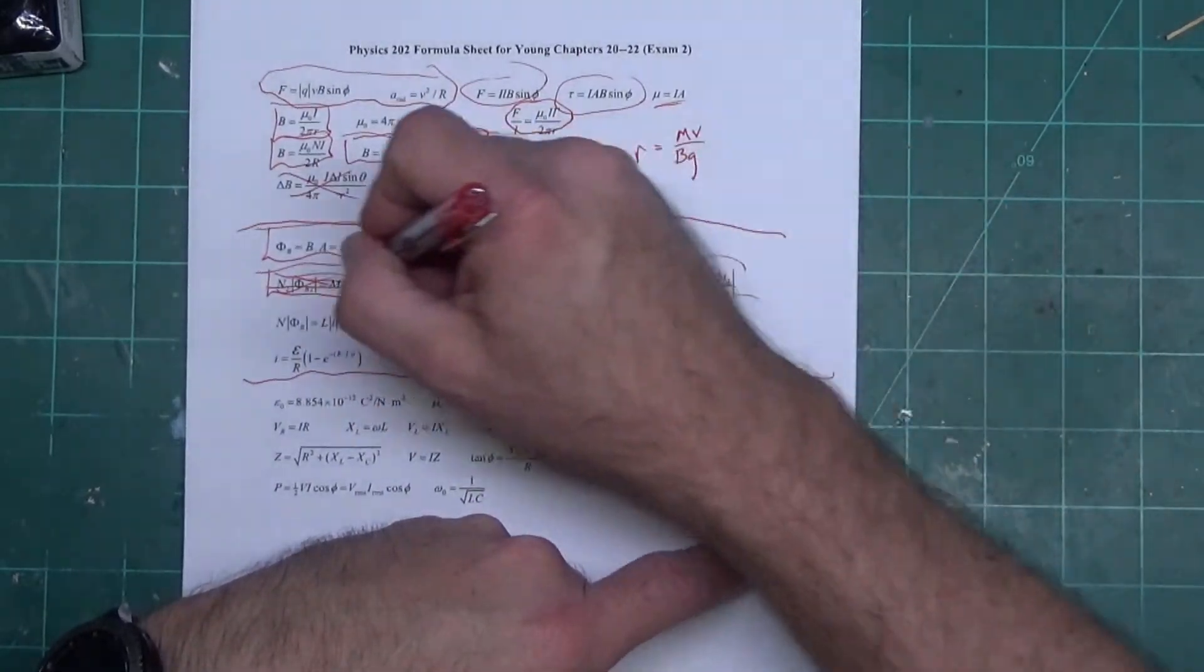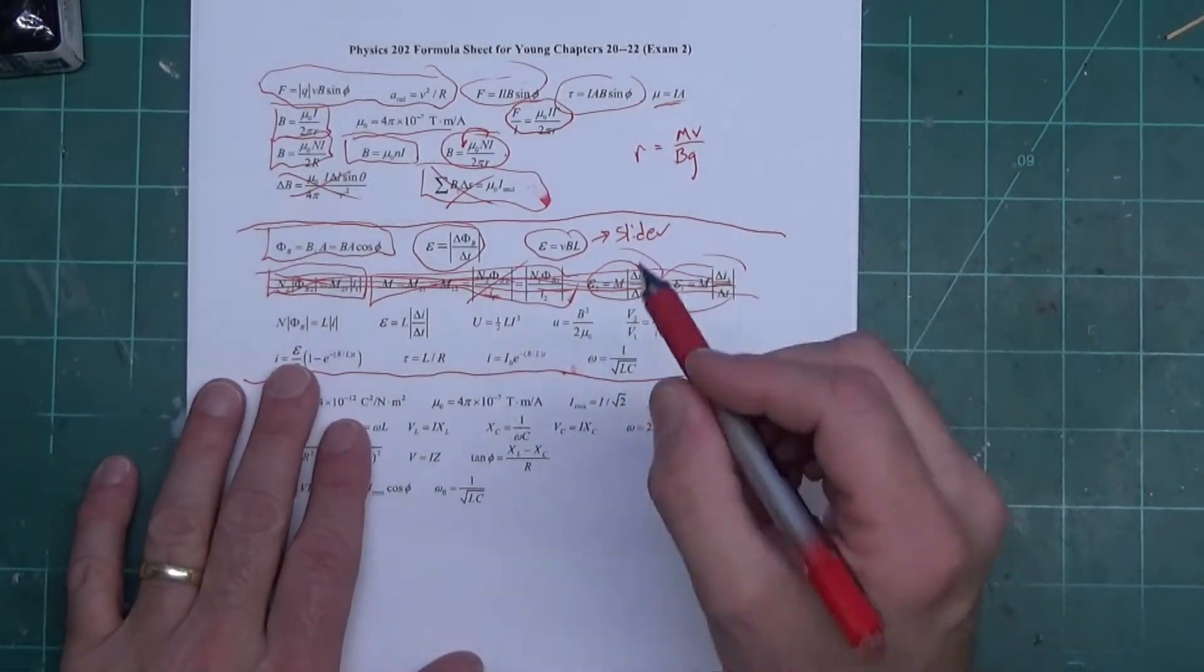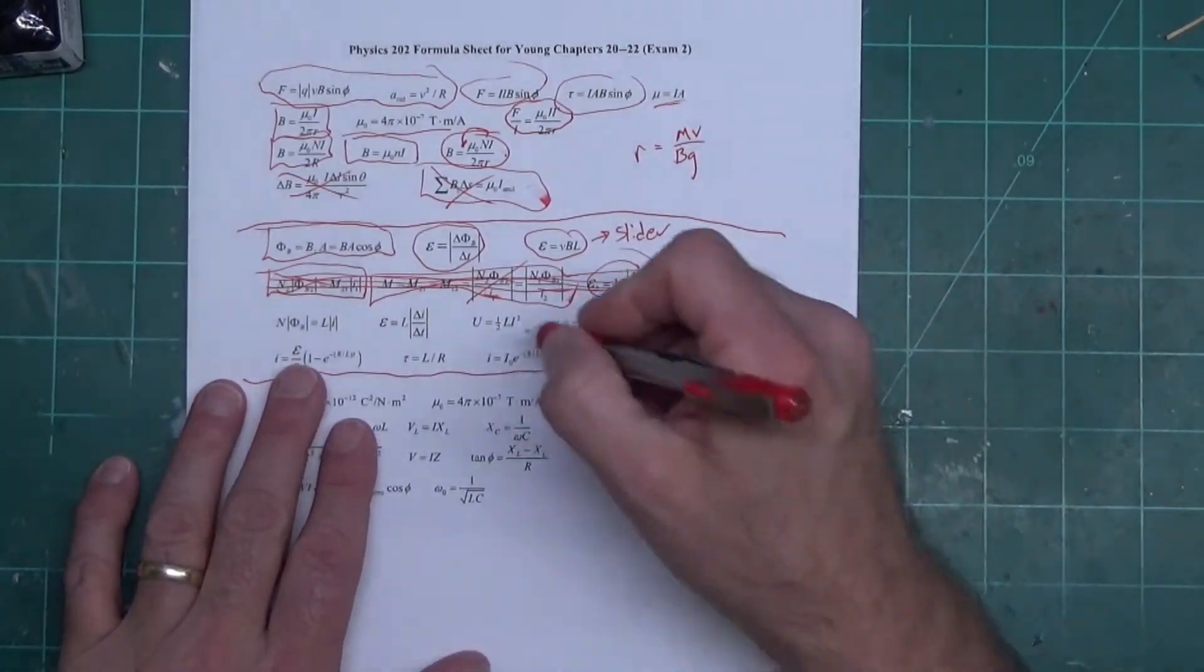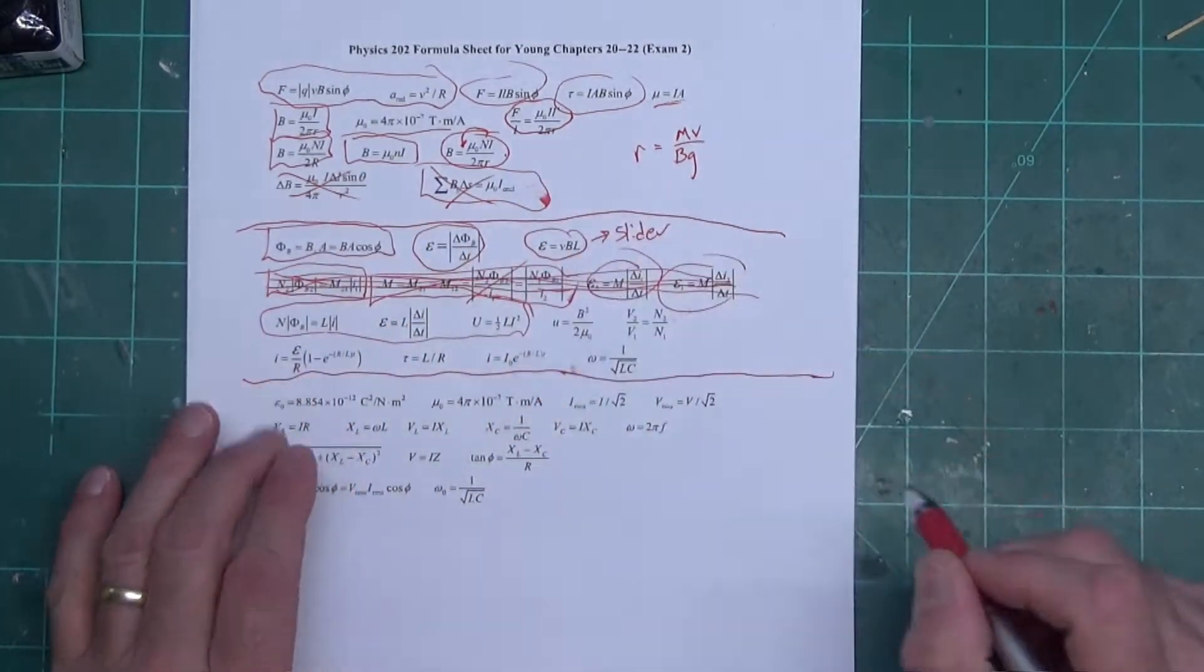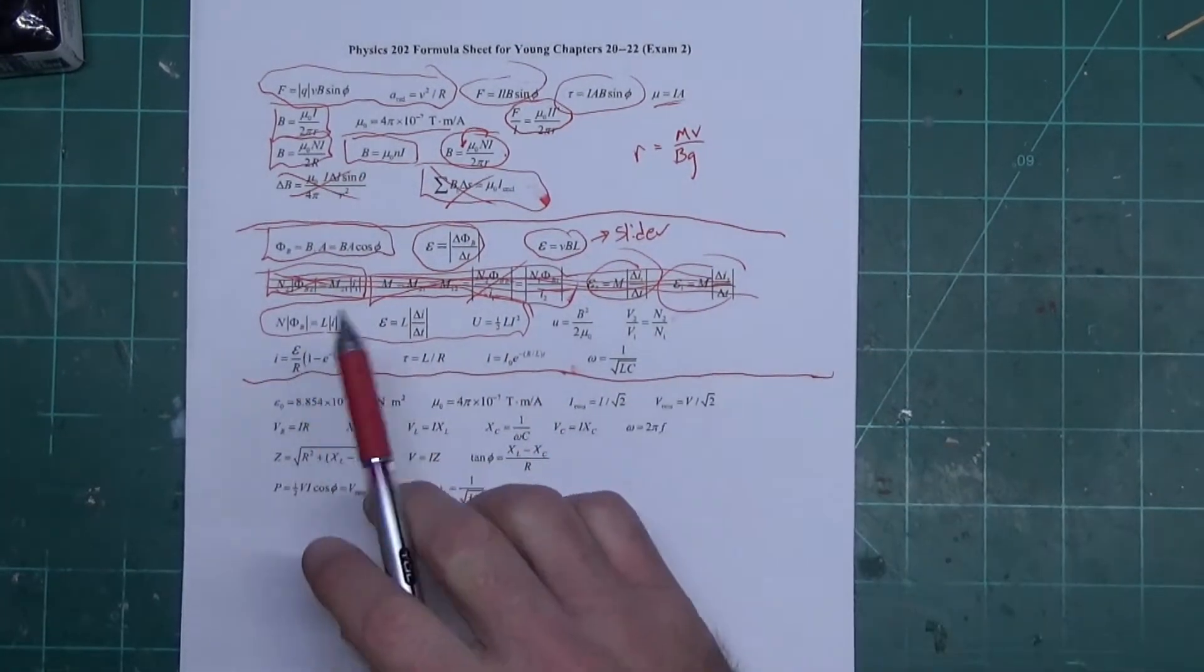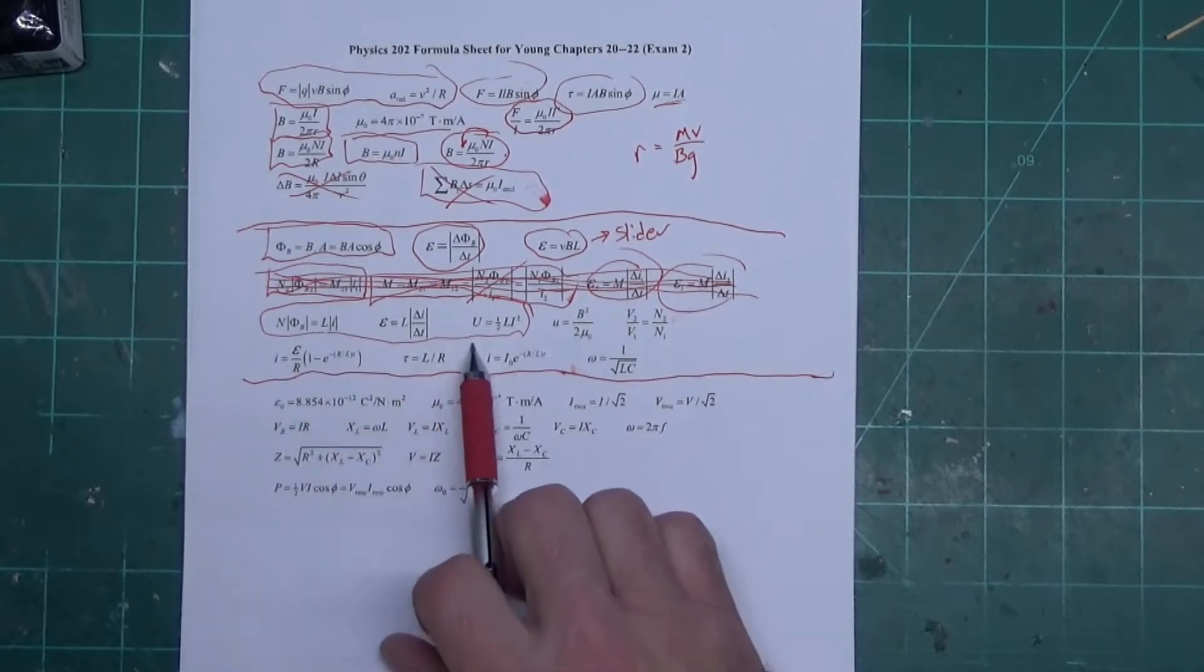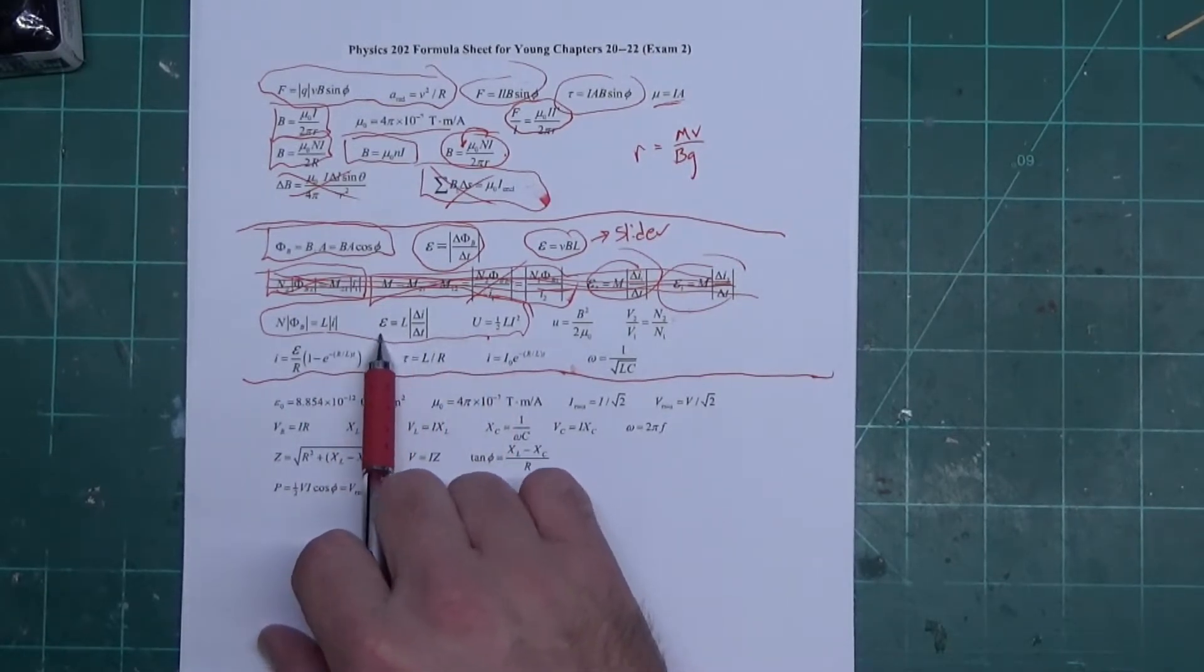Now down here, he does go after these guys down here. This is an inductor, a self-inductance. Right here, the energy stored in an inductor.